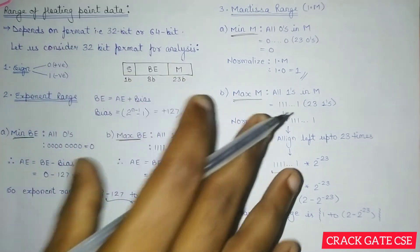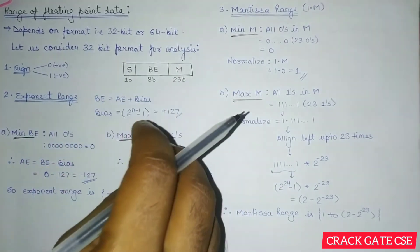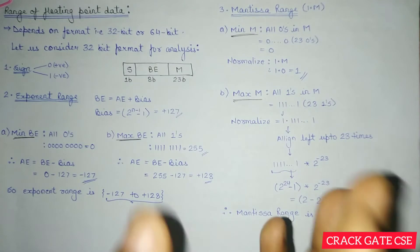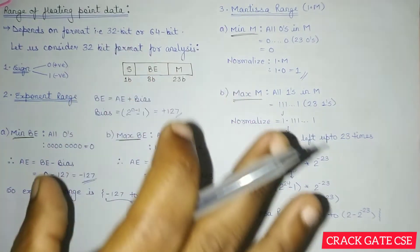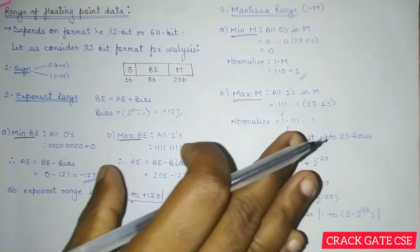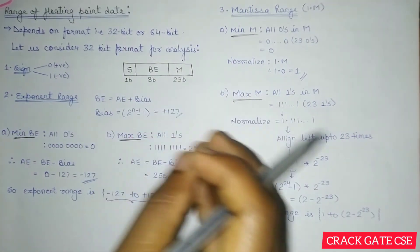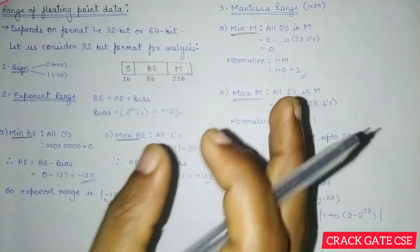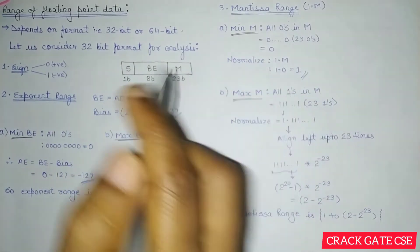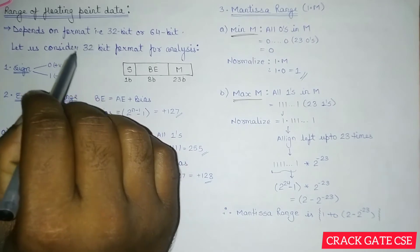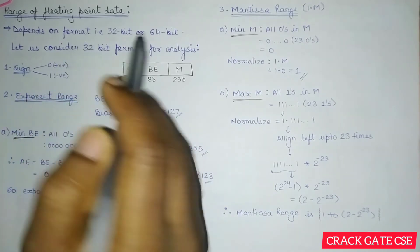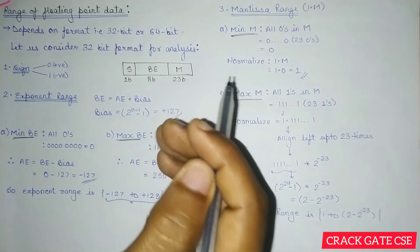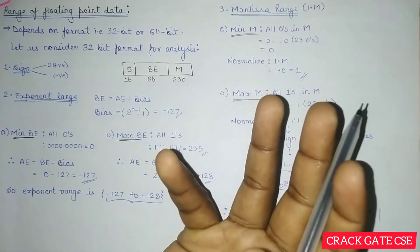Whatever procedure I am explaining over here will be useful for finding out the range of any data format. I will be considering the 32-bit format for the explanation, but using the same procedure you can find out the range for 64-bit or any hypothetical data format.